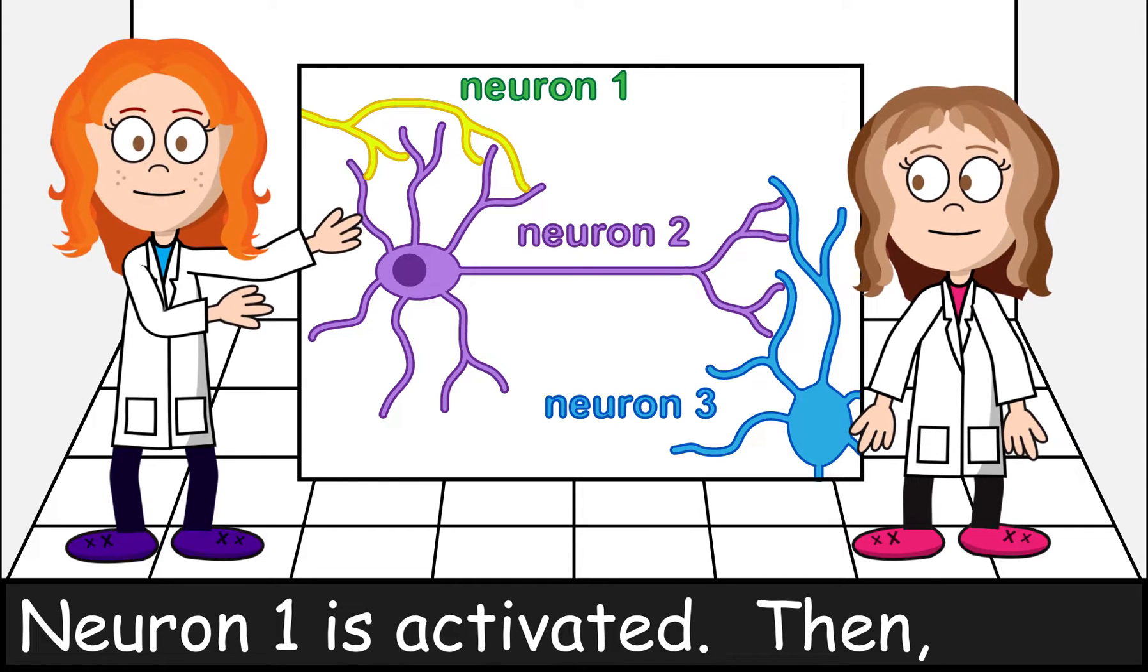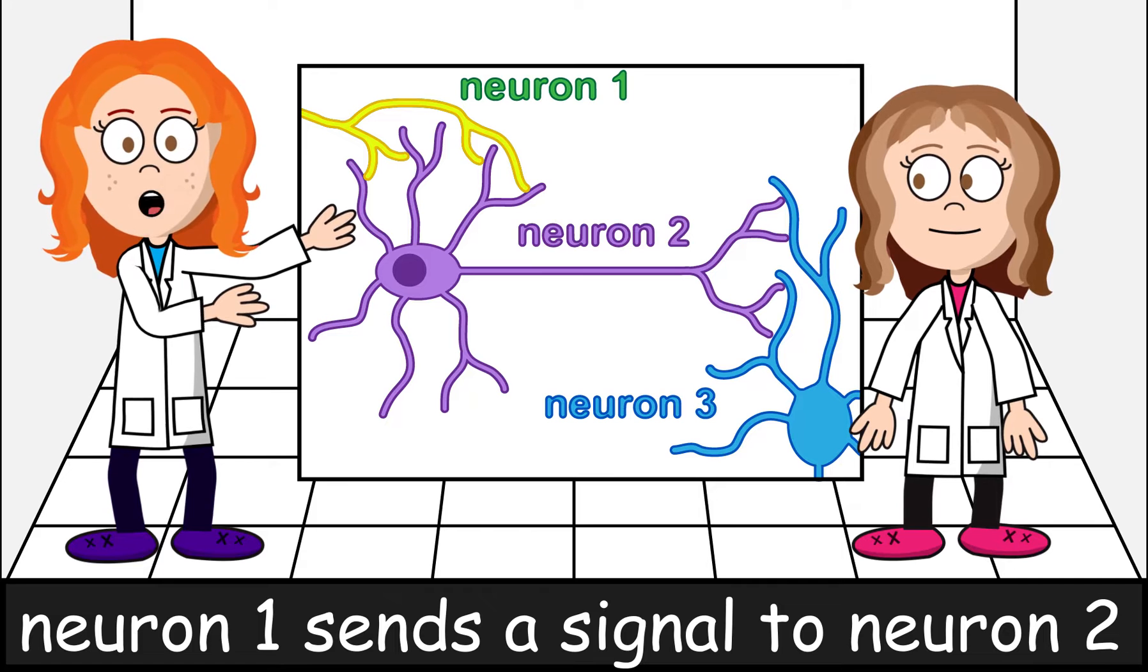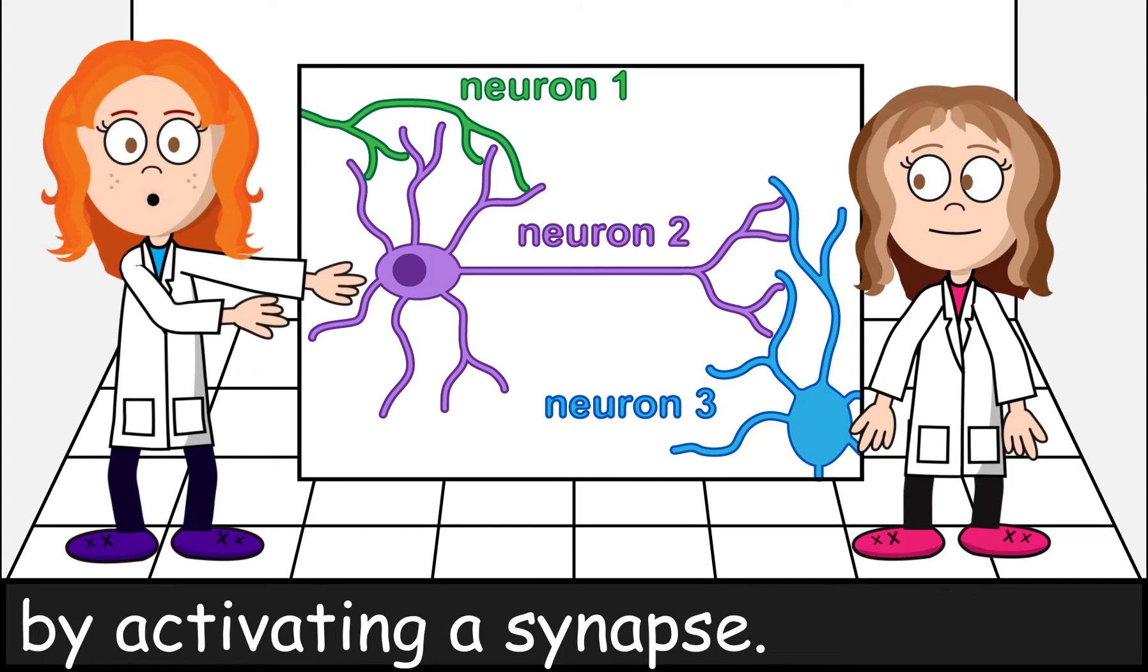Neuron 1 is activated. Then, neuron 1 sends a signal to neuron 2 by activating a synapse.